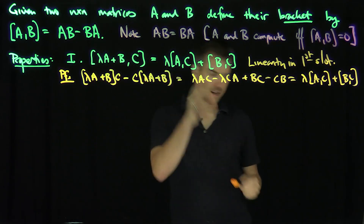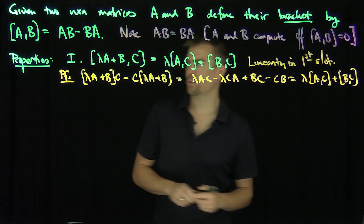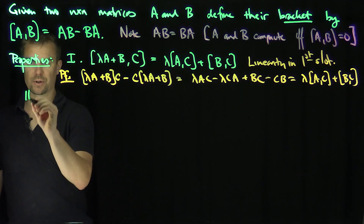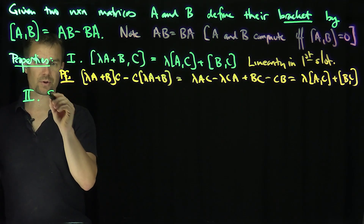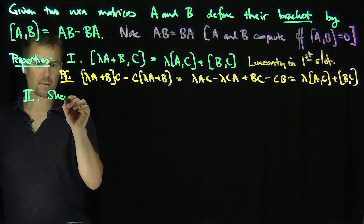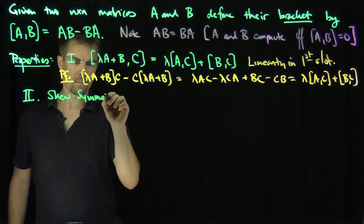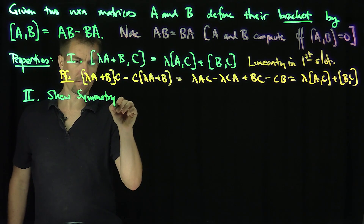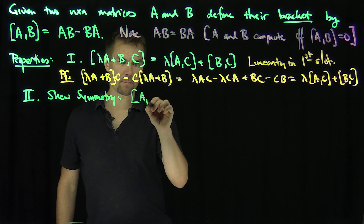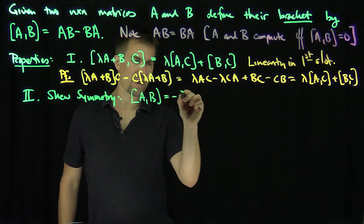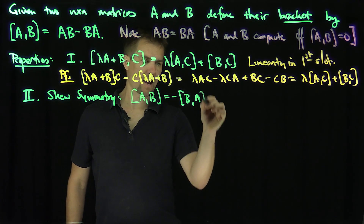We'll come back to linearity in the second slot in a moment, but let me prove the next property, which is skew symmetry. Skew symmetry states that the bracket of A and B is negative the bracket of B and A.